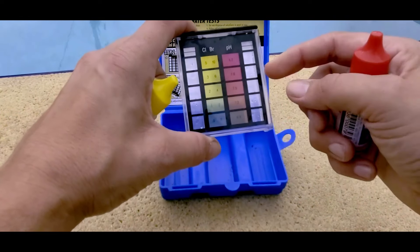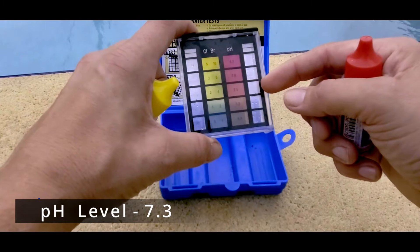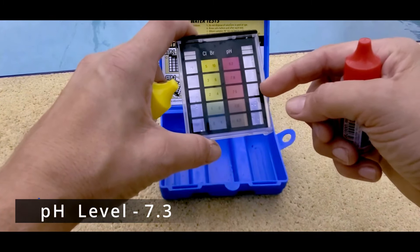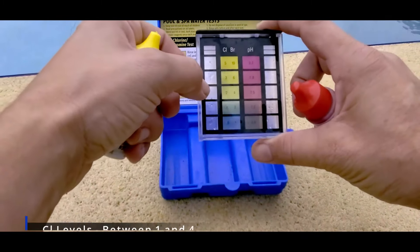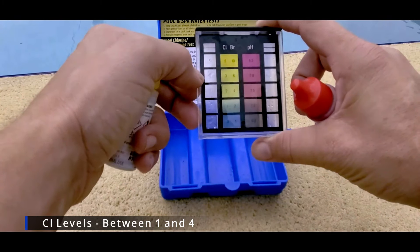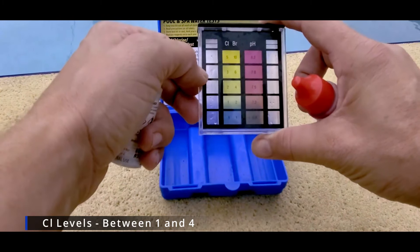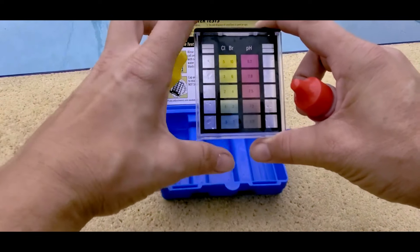And for example, the pH, you're really looking for around a 7.3. And the chlorine levels will vary, but somewhere between one and about three to four are pretty good.